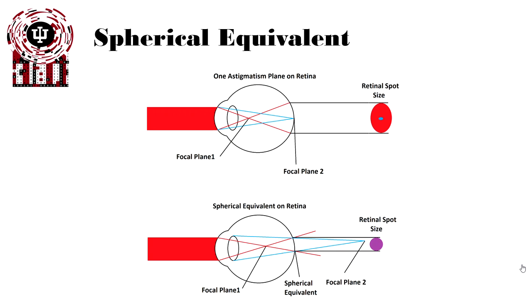Using the spherical equivalent on the retina, we reduce that retinal blur size by finding the midway point between the two, which actually improves acuity. So again, the spherical equivalent typically has the smaller retinal blur size, and the reason why it's called spherical equivalent is it's the spot where the retina, the spot looks a sphere, as opposed to when the astigmatism where it looks like a line or an oval.